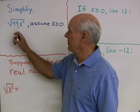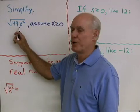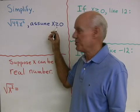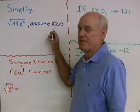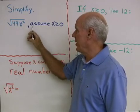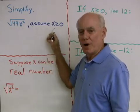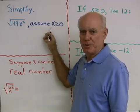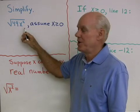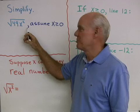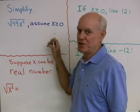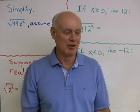What I want to do here is simplify √(49x²), assuming that x is greater than or equal to 0 — so x is a positive number or 0. This is a pretty simple problem, but a lot of times students are wondering: why are you going to all this trouble to put this restriction on here? There's a reason why this restriction is here, so I want to talk about that a little bit first.